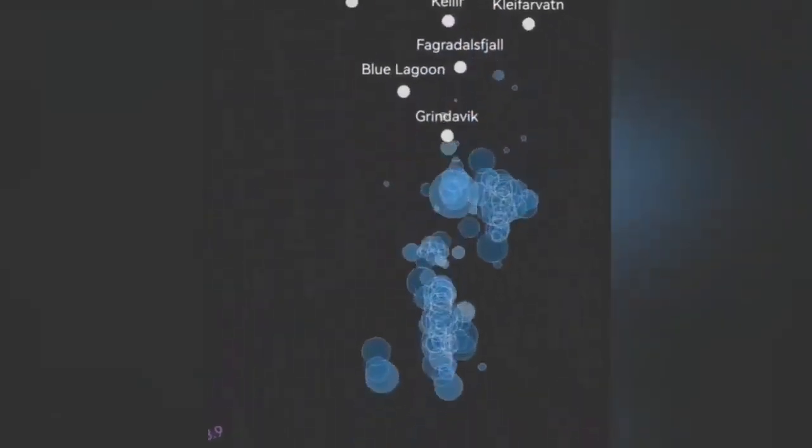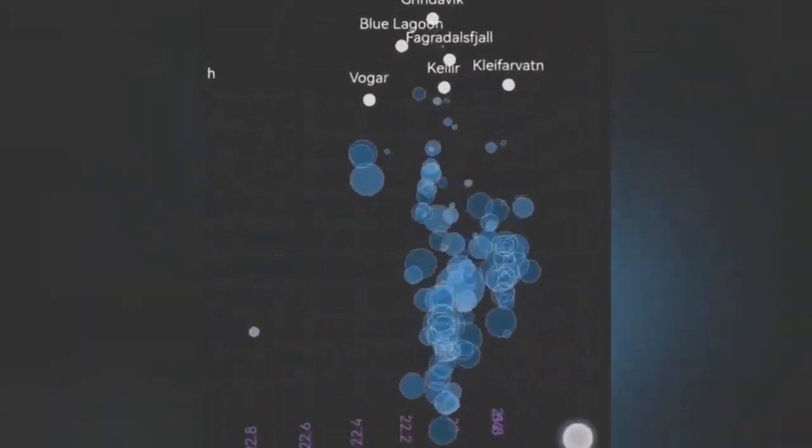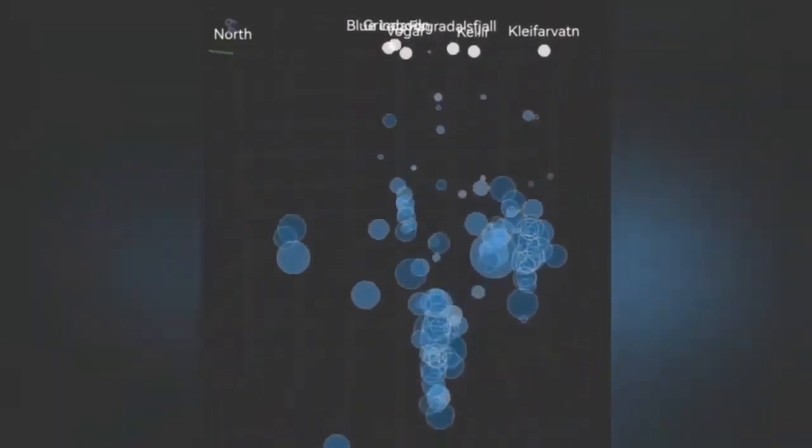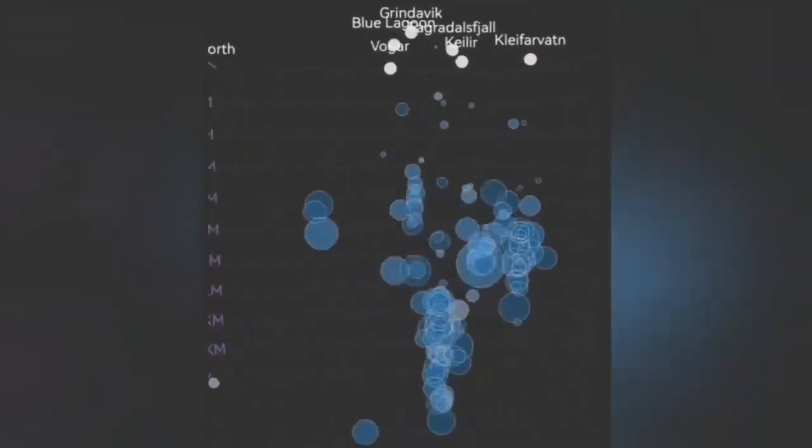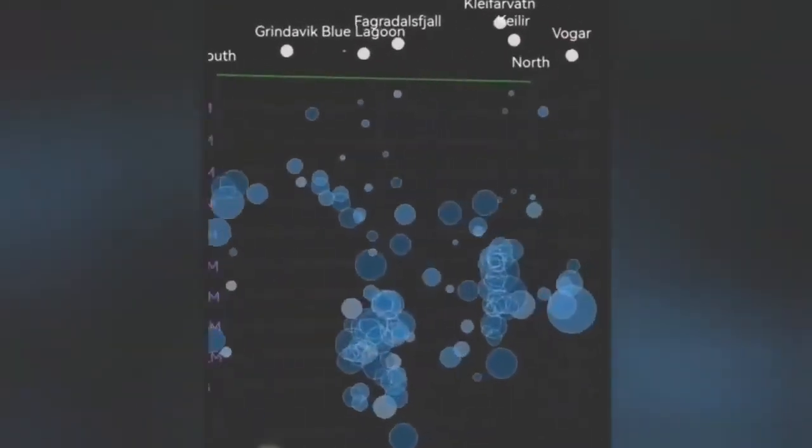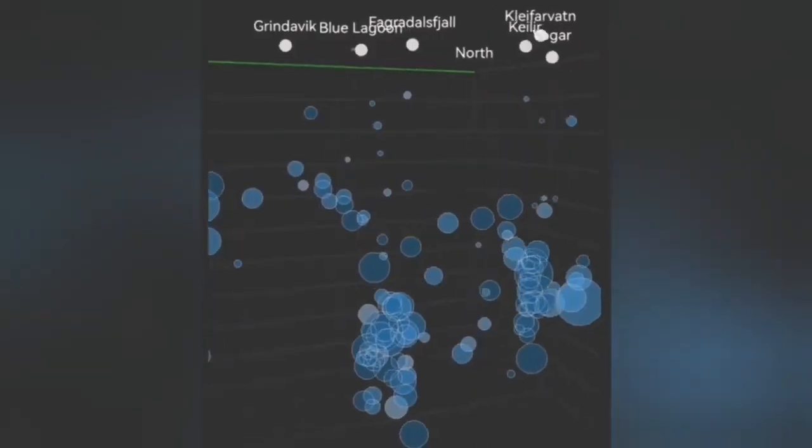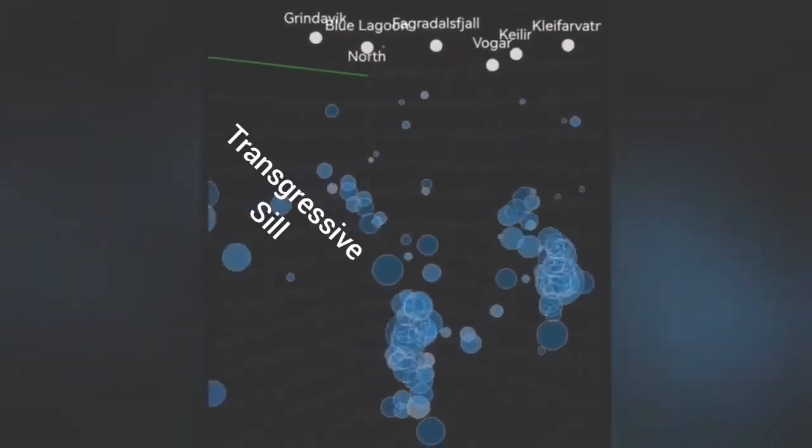For example, when I look at the earthquake depth chart, you can see a tongue of earthquakes at an angle moving from what is practically under Svartsengi toward Grindavik.